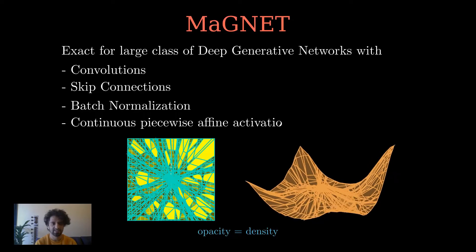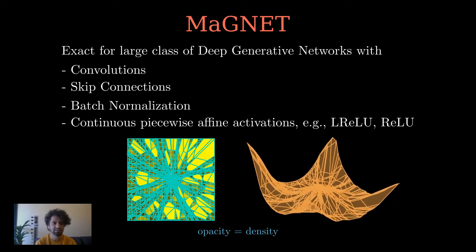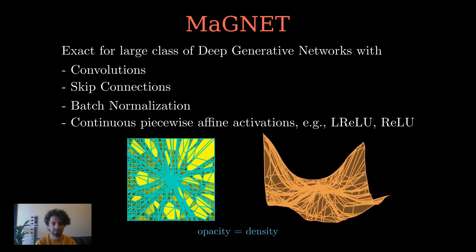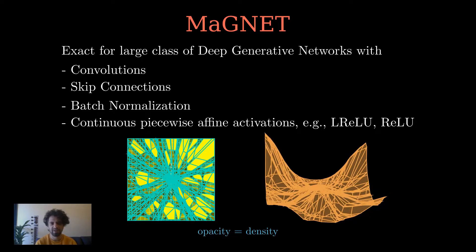MAGNET is exact for generative networks that use convolutions, skip connections, max pooling, batch normalization, and continuous piecewise non-linearities like Leaky ReLU or ReLU. MAGNET can also be used for state-of-the-art pre-trained models with complex architectures like StyleGAN2, BigGAN, and NVAE.